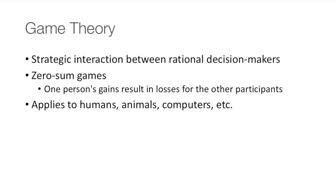Game theory is a study of a mathematical model of strategic interaction between rational decision makers. Originally, it addresses the zero-sum gains, in which one person's gain results in losses for the other participants. Today, game theory applies to a wide range of behavioral relations, and is now an umbrella term for the science of logical decision-making in humans, animals,